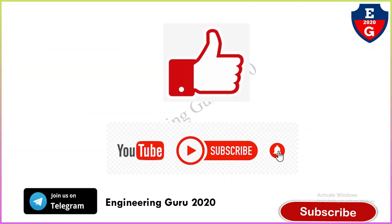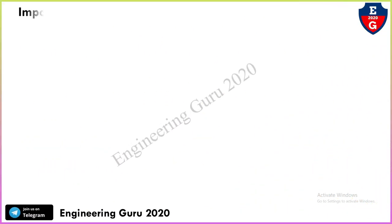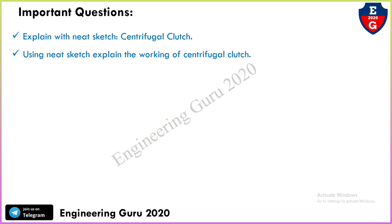If you find my video helpful, you can like, comment, share, and subscribe to my YouTube channel. Important questions for the university exams may be asked: 'Explain with a neat sketch, the centrifugal clutch' or 'Using a neat sketch, explain the working of the centrifugal clutch.' This is the most important concept for the university exam.